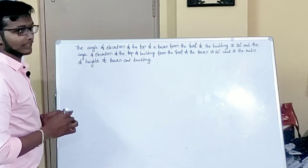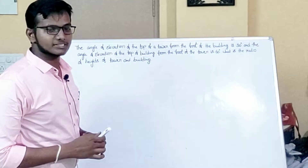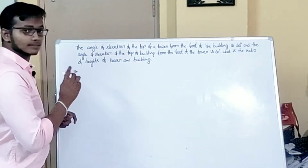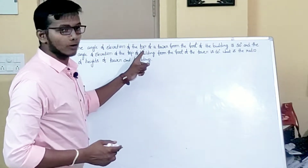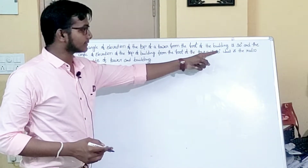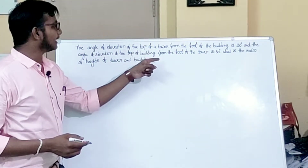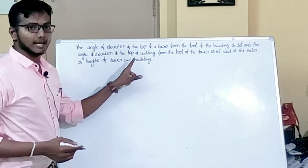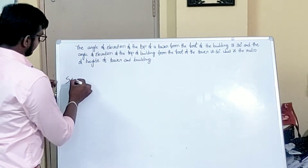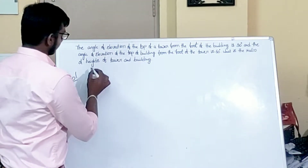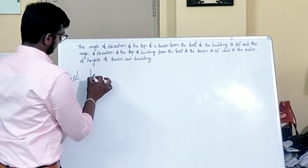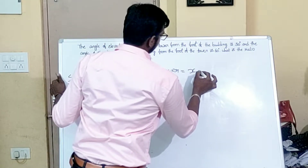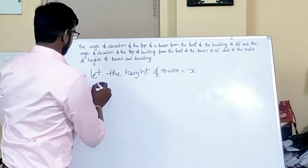Now let's move on to a problem. In trigonometry, you need to read the question thoroughly. The question is: the angle of elevation of the top of a tower from the foot of a building is 30 degrees, and the angle of elevation of the top of the building from the foot of the tower is 60 degrees. What is the ratio of the heights of the tower and the building?